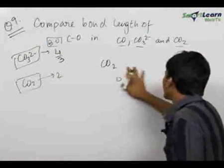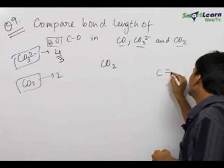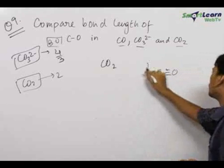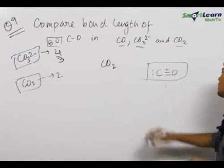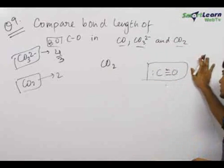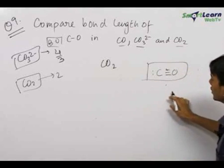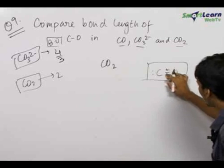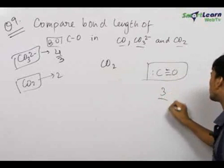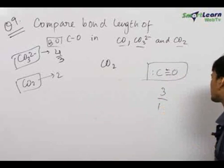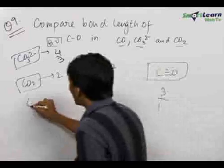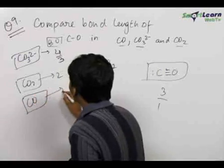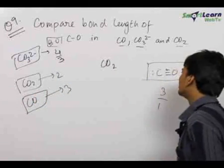Now for checking the case of carbon monoxide, we know that the carbon monoxide molecule has no other resonating structures, due to which the bond order is the total number of carbon-oxygen bonds, 3, upon the total number of resonating structures, that is 1. Therefore the bond order for the carbon-oxygen bond in carbon monoxide comes out to be equal to 3.